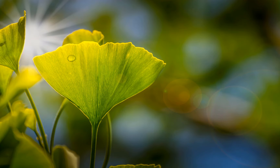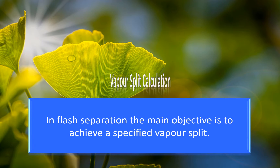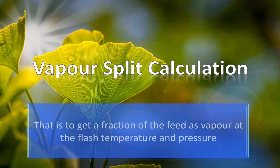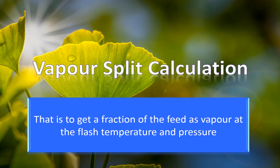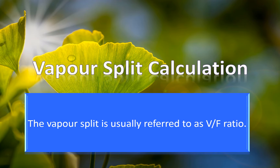Vapor split calculation. In a flash separation process, the main objective is to achieve a specified vapor split — that is, to get a fraction of the feed as vapor at the flash pressure and temperature. The vapor split is also referred to as the VF ratio.